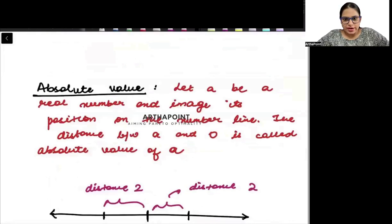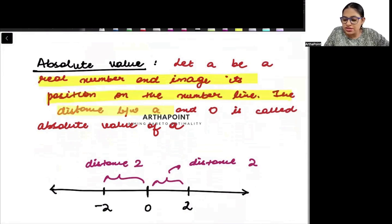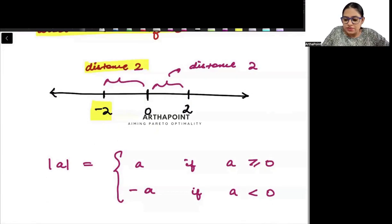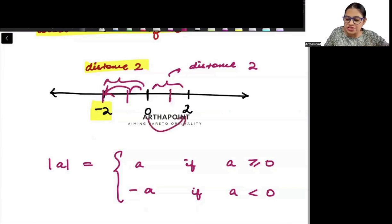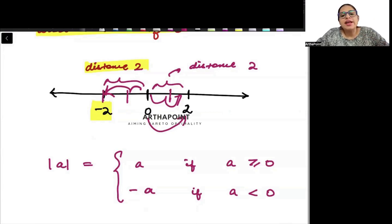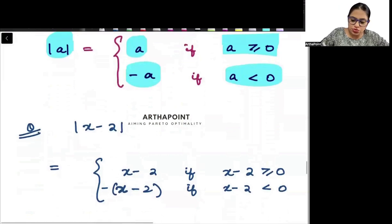Now let's talk about absolute value. Let a be a real number and its image position on the number line. The distance between a and 0 is called the absolute value of a. For example, the distance between minus 2 and 0 is 2 units, so the absolute value of minus 2 is 2. Distance can only be positive. Therefore the absolute value of a is: a when a is greater than 0, and minus a when a is less than 0.